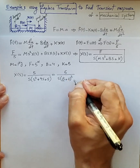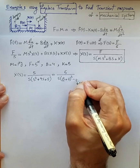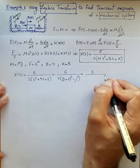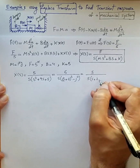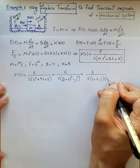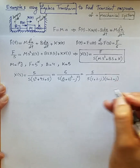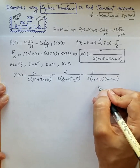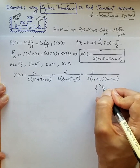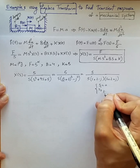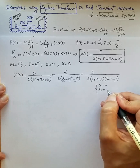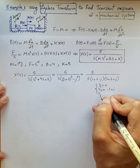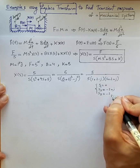Factoring further, this becomes 5 over s·(s+2−j)·(s+2+j). So we have three poles in this system: a pole at s=0, and a complex conjugate pair — s₂ = −2+j and s₃ = −2−j.